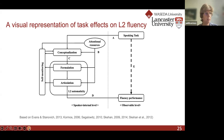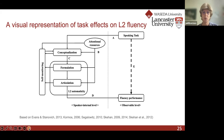A highly automatized, proficient speaker might show high fluency even on a difficult task, while lower-level learners might be more fluent on less difficult tasks and less fluent on more demanding tasks. Several studies have looked at conceptualization demands on fluency, because this is what can actually be manipulated a lot in task design — how difficult it will be to come up with the content, and how students are supported in producing the information they will have to express in another language.